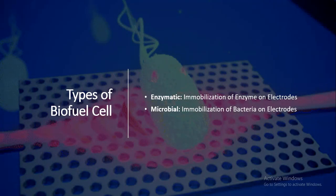There are two types of biofuel cells. Number one is the enzymatic biofuel cell, in which immobilization of enzymes occurs on the electrodes. The second one is the microbial biofuel cell, in which immobilization of bacteria occurs on the electrodes.